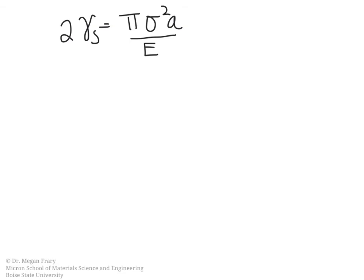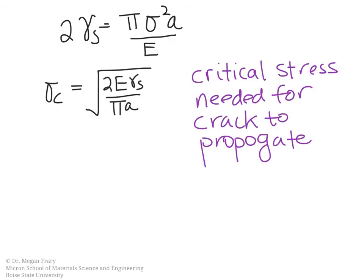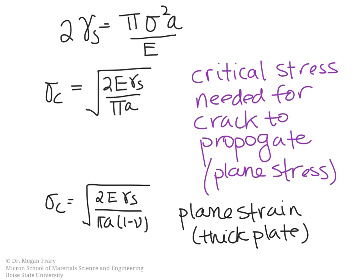If what we want to know is the critical stress needed for a crack to propagate, we can solve for sigma and find an expression in terms of material properties — the Young's modulus and the surface energy — but it also depends on the current crack length. It's important to note that this is for plane stress. We have a slightly modified equation in the case of plane strain for a thicker plate, modified by the term 1 minus nu squared, where nu is the Poisson's ratio, due to confinement in the thickness direction.